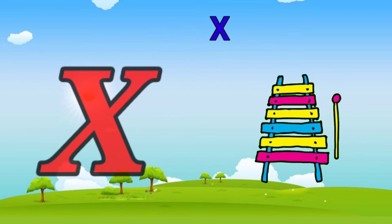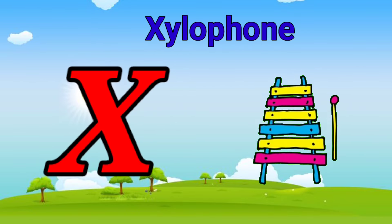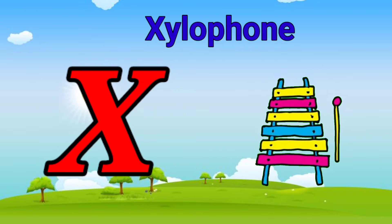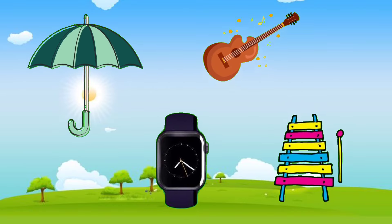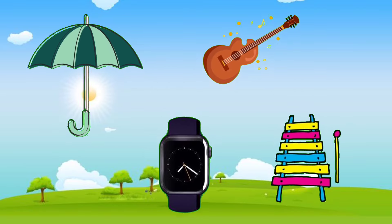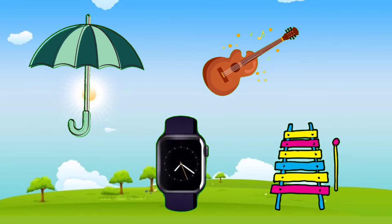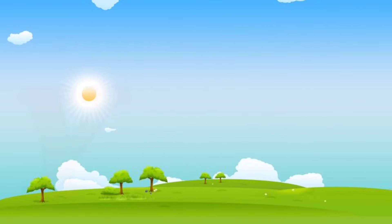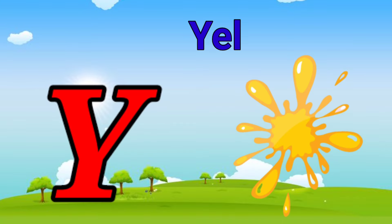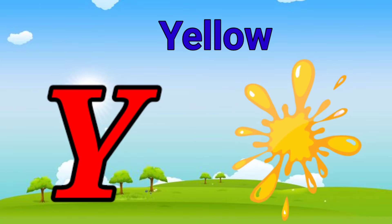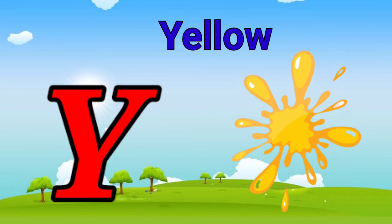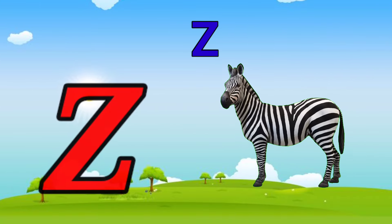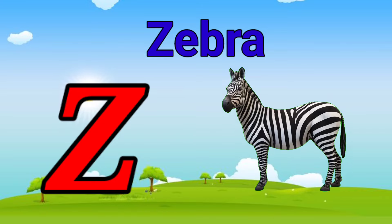X is for xylophone, z-z-xylophone. Y is for yellow, y-y-yellow. Z is for zebra, z-z-zebra.